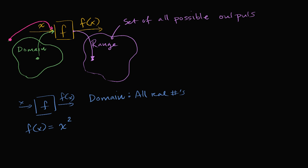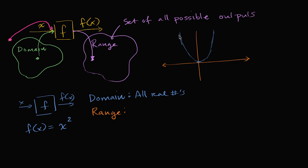But what's the range? What is the set of all possible outputs? To help us think about it, let me draw a graph. The graph of f of x equals x squared is going to look something like a parabola with a vertex right at the origin. This is the graph y equals f of x. This is the x-axis, and this is the y-axis.